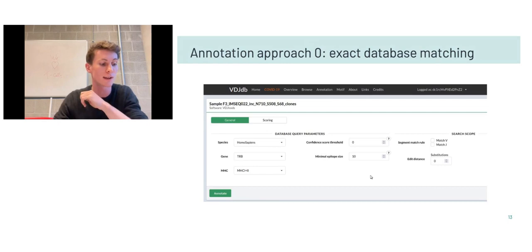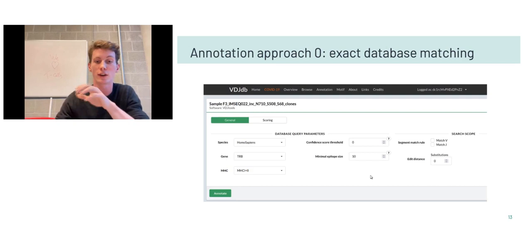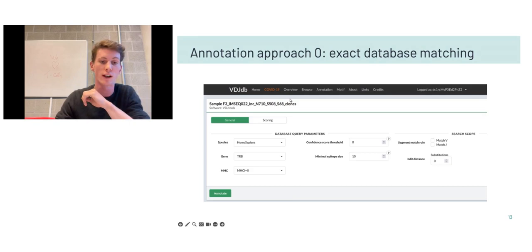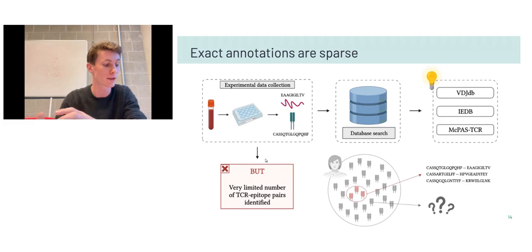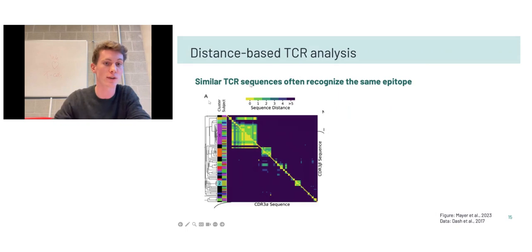Nevertheless this data is still extremely valuable. Given a set of TCRs from high-throughput TCR sequencing, we can annotate them with their epitope reactivity using exact database matching — for example in the VDJDB you can upload your own set of sequences and it returns the matches. One flaw is that because the TCR space is very diverse and large while our annotated set is limited, we don't expect many matches.